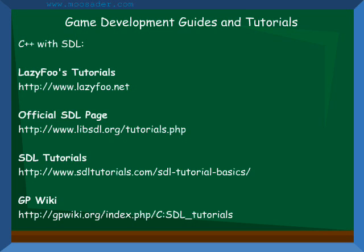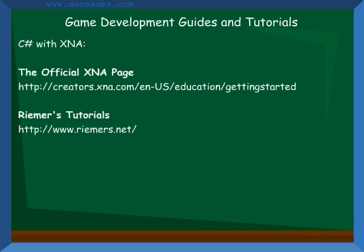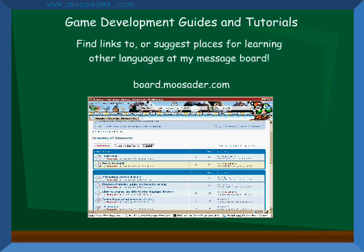There are a lot of C++ and OpenGL tutorials at nihi.gamedev.net, videotutorialsrock.com, and lighthouse3d.com, and there are plenty more out there if you do a search. A couple of places you can go for C Sharp and XNA tutorials are the official XNA website and Reamer's 2D and 3D tutorials. To find links for learning other languages, or if you want to suggest a specific website or book, please check out my message board's directory of resources forum.